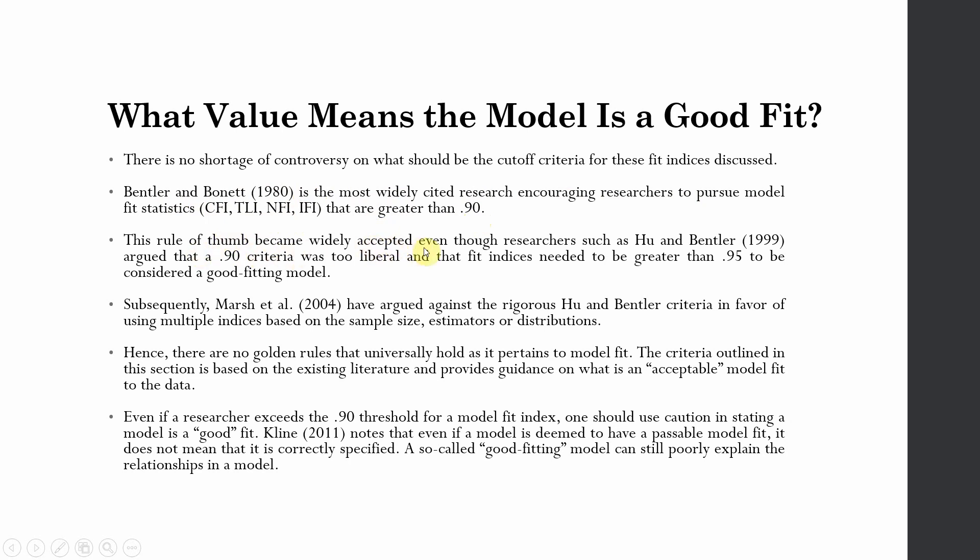The rule of thumb became widely accepted, even though researchers such as Hu and Bentler in 1999 argued that 0.90 criteria was too liberal and that fit indices needed to be greater than 0.95. We've got references for both, so we can use both depending on our model and our study.